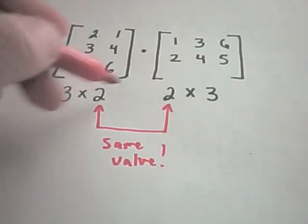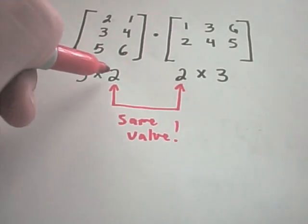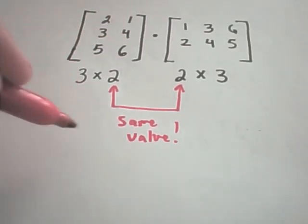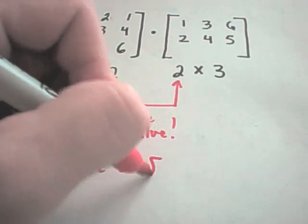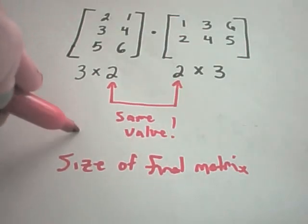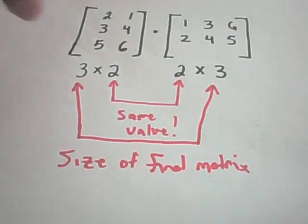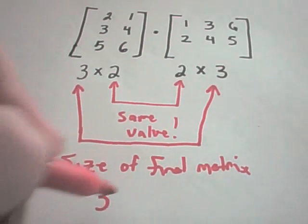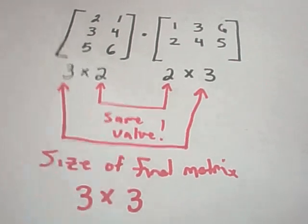If these two numbers are different, you cannot multiply the two matrices. If the two values on the inside are the same, the size of the final matrix when you do multiply actually comes from the outside numbers. So if you look at the outside numbers, I have a 3 and a 3. If I were to multiply these two matrices, you would find that you get a 3 by 3 matrix. And maybe we'll come back to this example here in just a second, and we'll do maybe one a little bit easier here first.